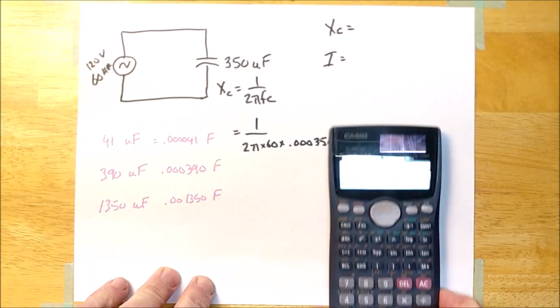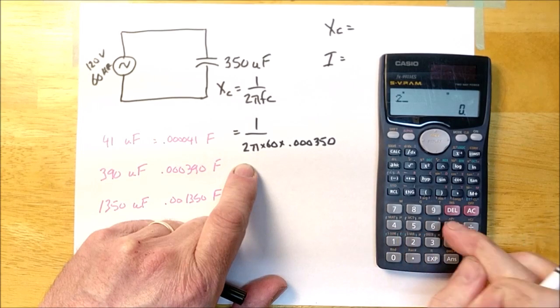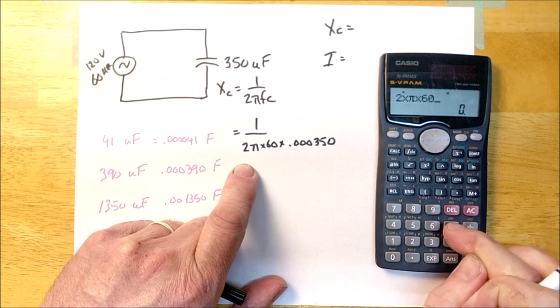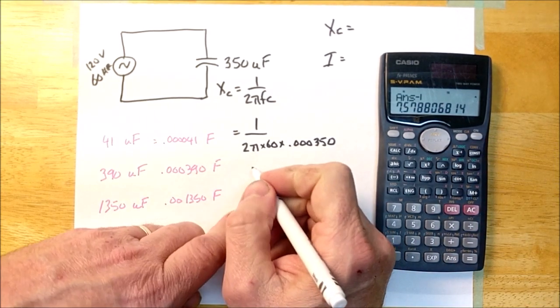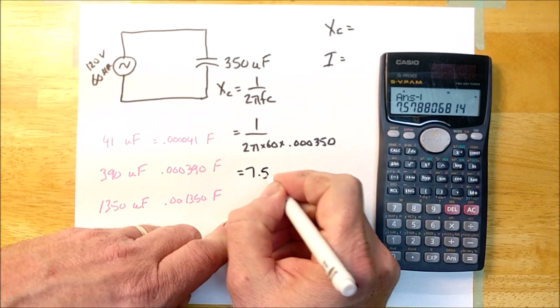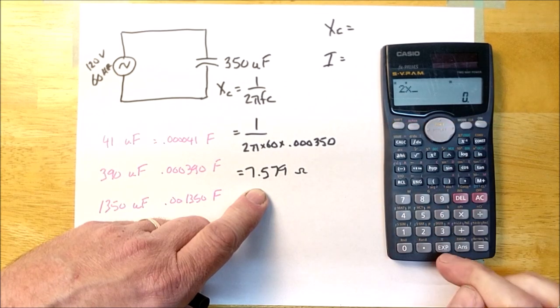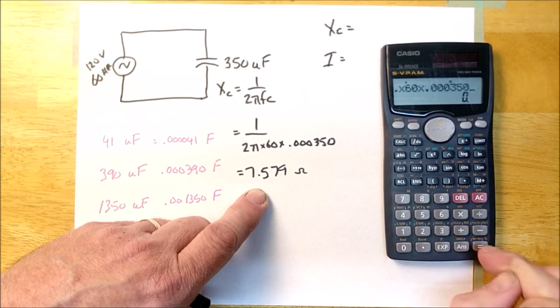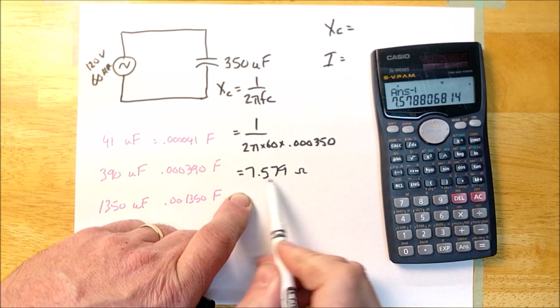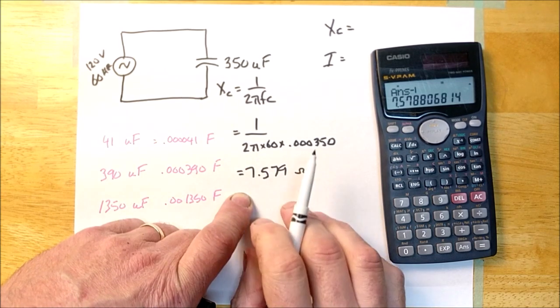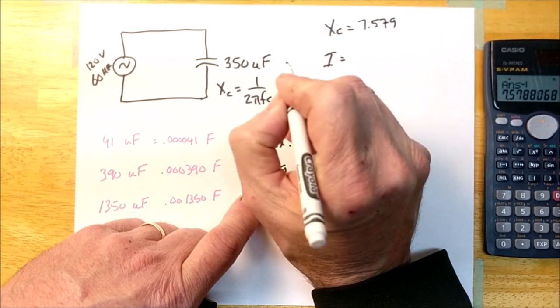I'm going to use the one over x button to calculate this. What I'm going to do is calculate all the stuff on the bottom and then hit one over x. So, two times pi times 60 times 0.000350, then I hit equals, then I hit one over x, equals. And what I'm getting is 7.579 ohms. So, now I'm going to calculate that again, because I just want to make sure I didn't screw it up. Yeah, I'm getting the same answer twice, so I feel pretty confident about that. So, in this particular circuit, this thing is going to have a current limiting ability of 7.579 ohms.